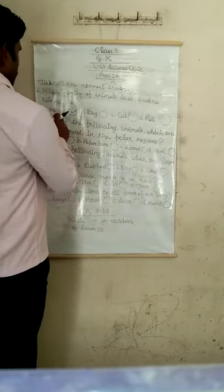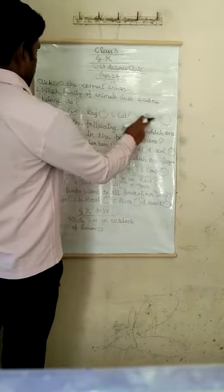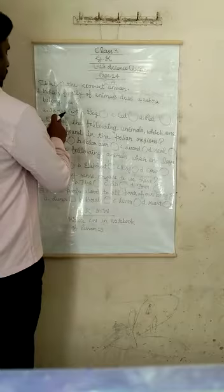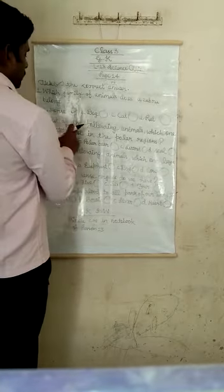The options are horse, dog, tiger. The correct answer is horse. Horse means 'ghora' in Hindi.